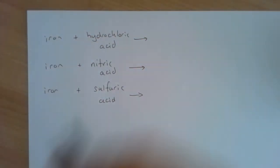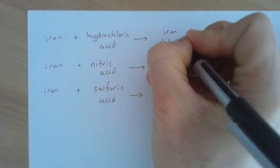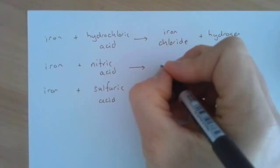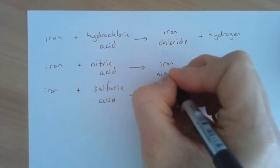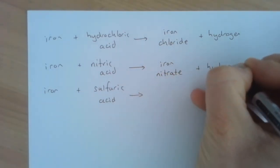Iron and hydrochloric acid make the salt iron chloride and also produce hydrogen gas. Iron and nitric acid make the salt iron nitrate and also make hydrogen gas.